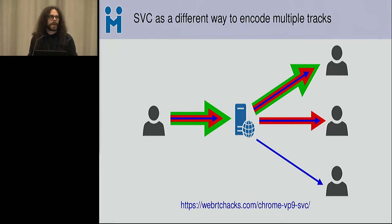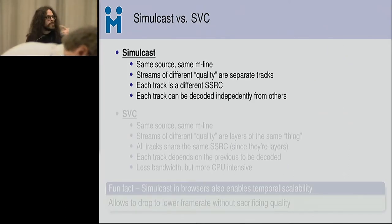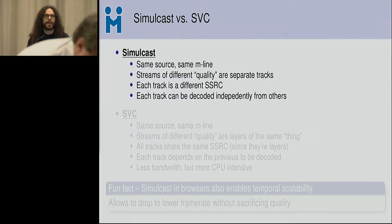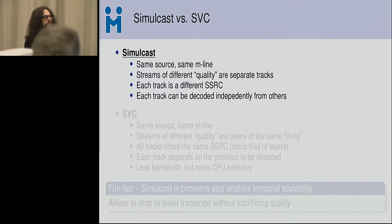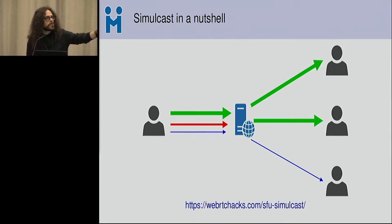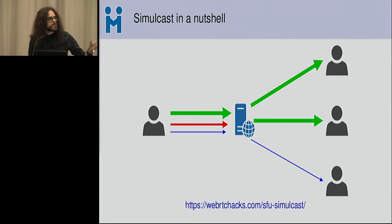The end effect is the same as simulcast but implemented in a conceptually very different way. From a signaling perspective, with simulcast you use the same M-line for the same source — capturing your webcam — but the different quality tracks are signaled as separate tracks. Each of those tracks is mapped to a different SSRC when mapped to an RTP stream. From a network perspective, these are actually three separate streams that can be decoded completely independently from each other, with no dependency on the other streams.